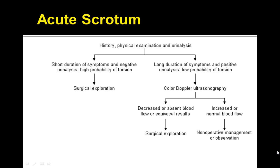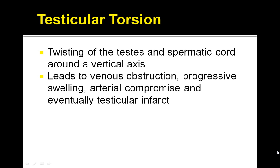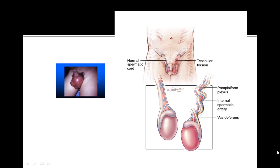However, if there's decreased or absent blood flow on the color Doppler ultrasonography, then you're looking at a surgical exploration. Testicular torsion is basically twisting of the testes and the spermatic cord around a vertical axis. This leads to venous obstruction, progressive swelling, arterial compromise, and eventually testicular infarct.